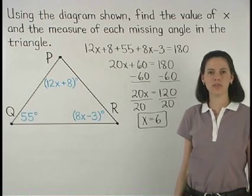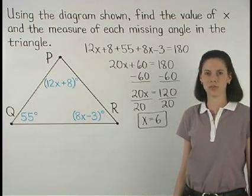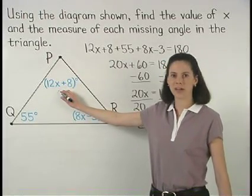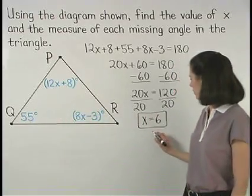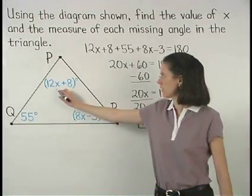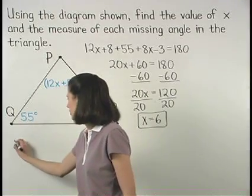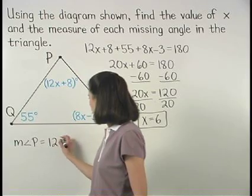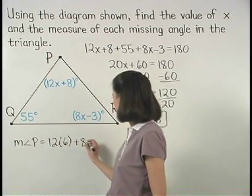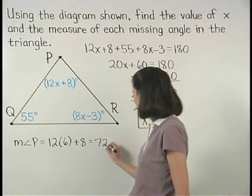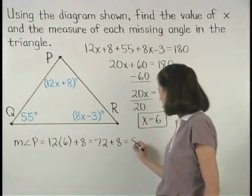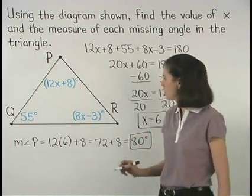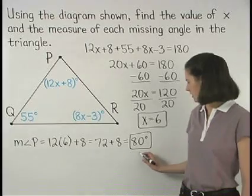Now to find the measures of each of the missing angles in the triangle, remember that the measure of angle P is 12x plus 8. So if we plug a 6 in for x, then we have, for the measure of angle P, 12 times 6 plus 8, which is 72 plus 8, or 80 degrees.